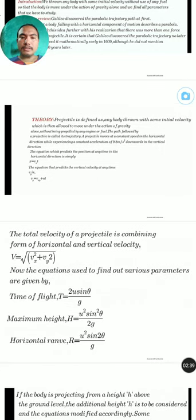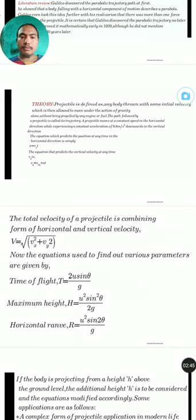Theory: A projectile is defined as any body thrown with some initial velocity which is then allowed to move under the action of gravity alone without being propelled by any engine or fuel. The path followed by a projectile is called its trajectory.